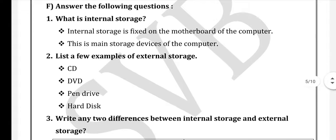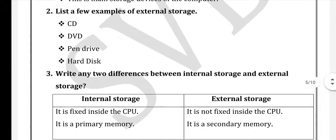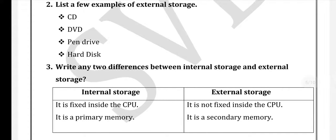Answer the following questions. What is internal storage? Internal storage is fixed under the motherboard of the computer. It is the main storage device of the computer, fixed inside the CPU. Examples of external storage: CD, DVD, Pen drive, Hard disk.